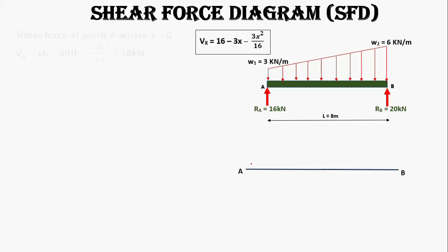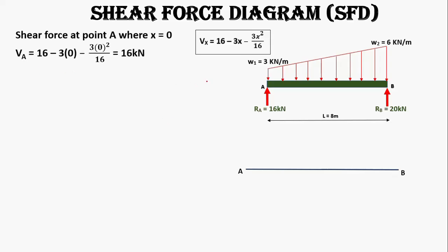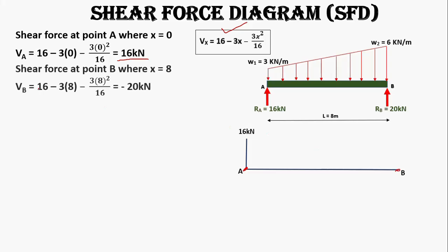At point A where x = 0, the shear force is 16 kN. We draw a line of 16 kN upward at A. At point B where x = 8, substituting into the shear force equation gives a shear force of −20 kN, so we draw a 20 kN line in the downward direction.